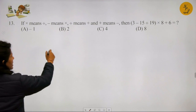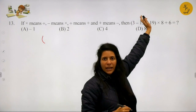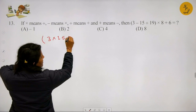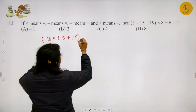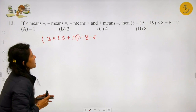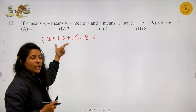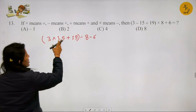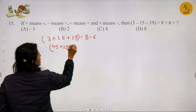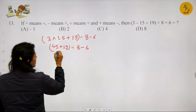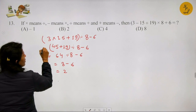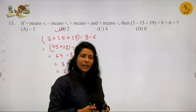Question 13: This expression has a bracket, so bracket must be solved first per BODMAS. Converting: 3 (minus→multiply) 15 (divide→plus) 90, all in bracket, then (multiply→divide) 8, (plus→minus) 6. Inside bracket: 3 × 15 = 45, then 45 + 90 = 135... wait, correcting: bracket gives 45 + 19... resolving to 64 ÷ 8 - 6 = 8 - 6 = 2. Option B is the correct answer.